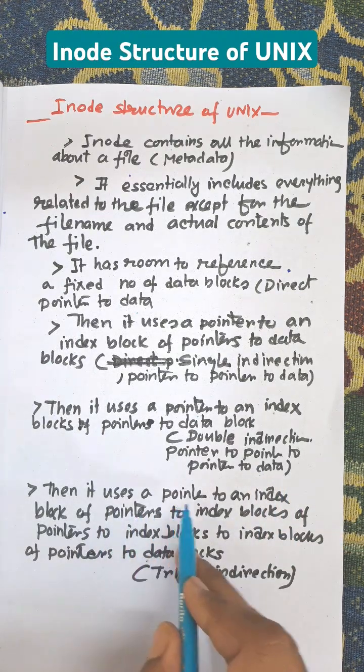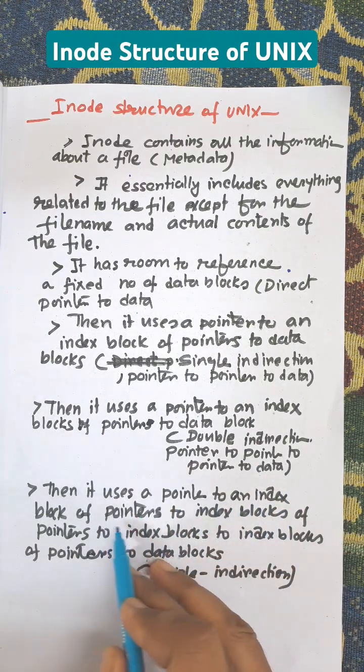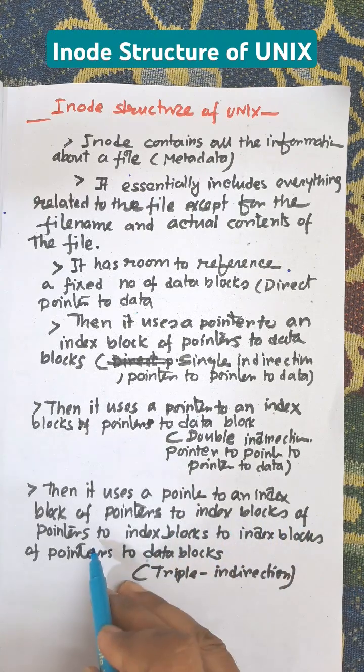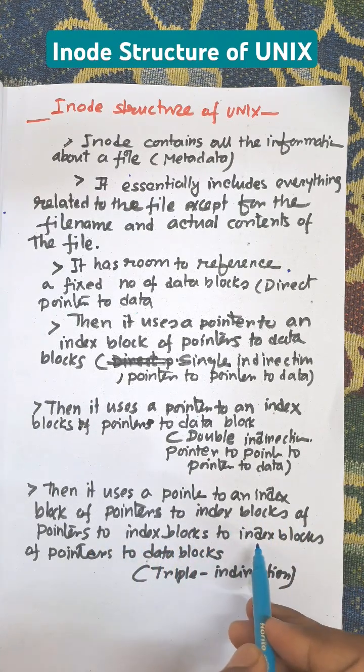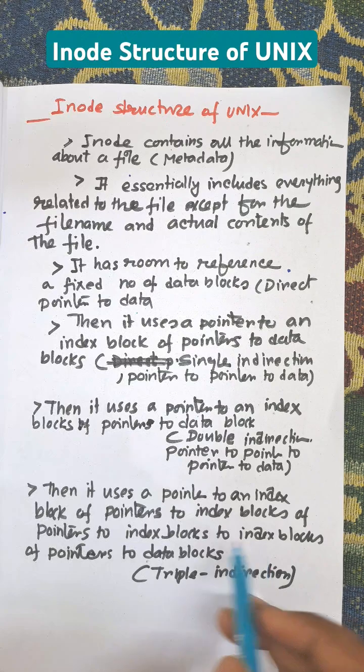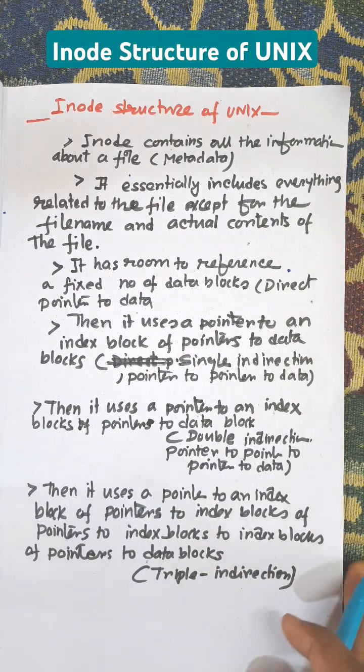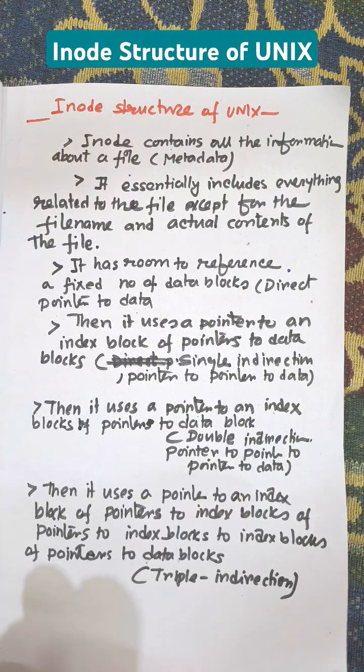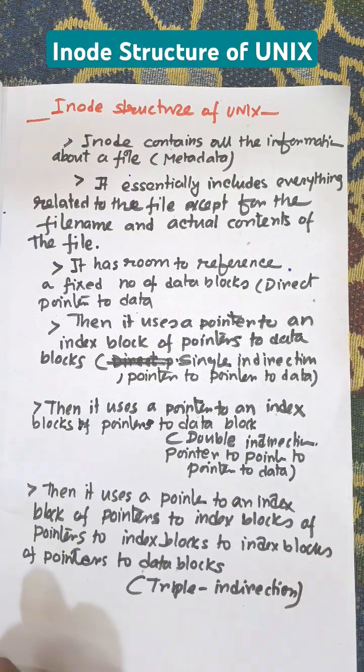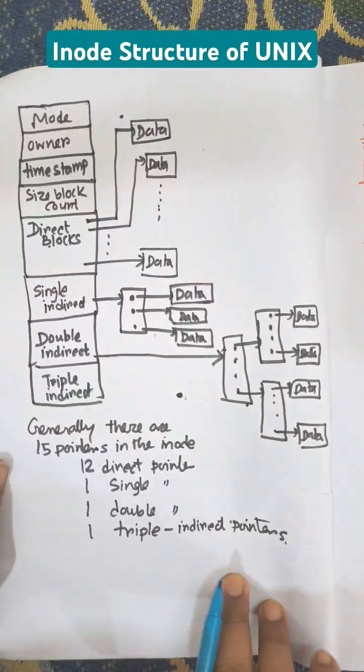Then it uses pointer to an index block of pointers to an index block of pointers to data blocks, that's triple indirection. Index block to another index block to another index block then finally goes to data.